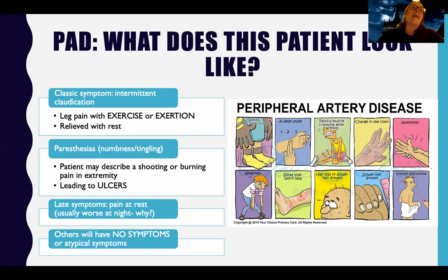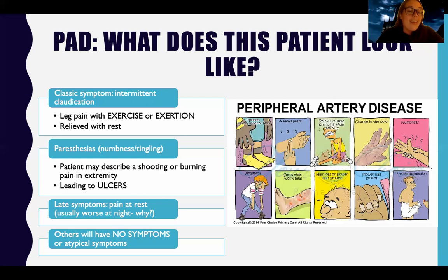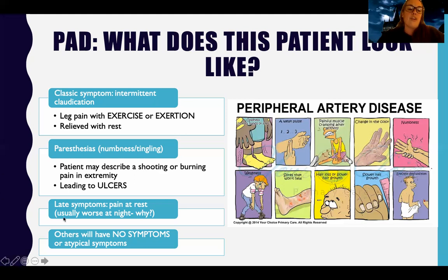Late symptoms include pain at rest, indicating severe blockage — similar to coronary arteries needing a stent. Pain is often worse at night because decreased cardiac output overnight reduces flow to the extremities. At night, the body shunts blood away from extremities toward the digestive system and other areas, so decreased cardiac output means even less flow to already compromised legs.